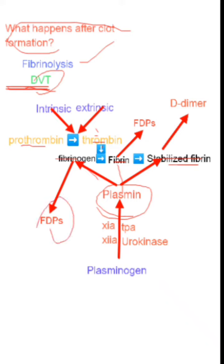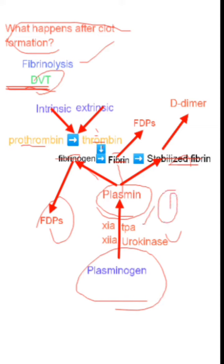So the work of plasmin is to degrade all three of these. Where does plasmin come from? It comes from plasminogen. Plasminogen is converted into plasmin through urokinase and tissue plasminogen activator (tPA), which comes from the injured epithelium. Factor 11a and factor 12a are also necessary for this process.